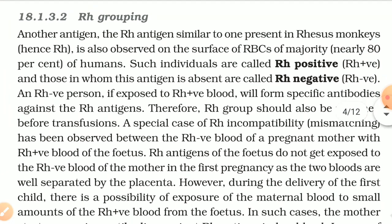18.1.3.2 Rh Grouping. Another antigen, the Rh antigen — similar to one present in rhesus monkeys — is observed on the surface of RBCs of the majority (nearly 80%) of humans. Such individuals are called Rh positive; those in whom this antigen is absent are called Rh negative. An Rh negative person, if exposed to Rh positive blood, will form specific antibodies against the Rh antigen. Therefore, Rh group should also be matched before transfusion.